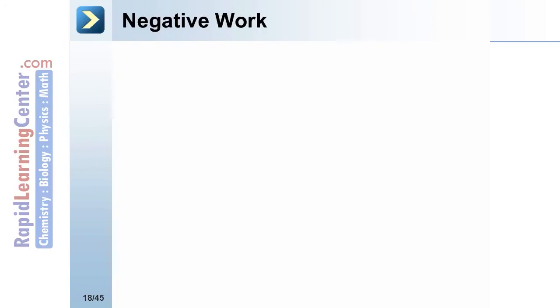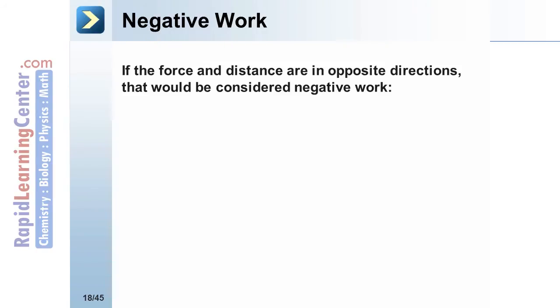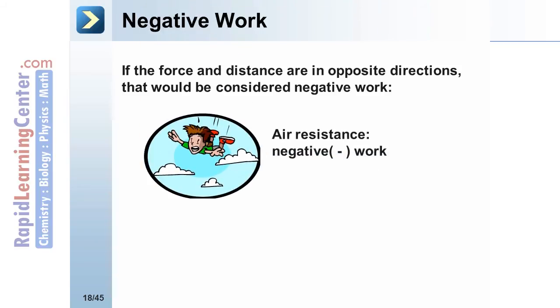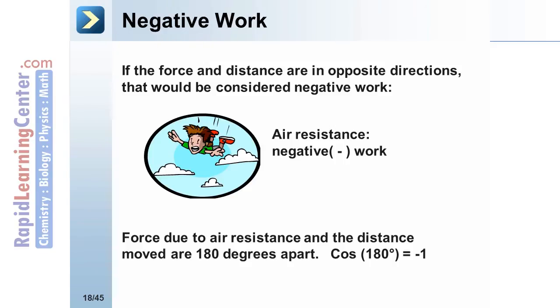Negative work. If the force and distance are in opposite directions, that would be considered negative work. Consider a skydiver as they fall through the air. In this case, the force due to air resistance, pointing up, and the distance moved, pointing down, are 180 degrees apart. When we find the cosine of 180 degrees, that gives us negative one. Thus, in this example, air resistance is doing negative work.